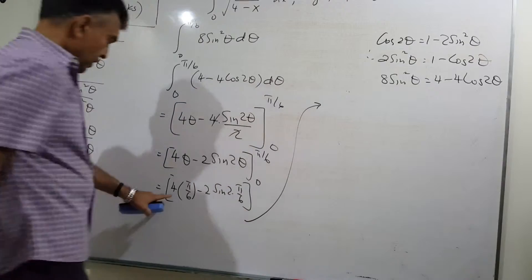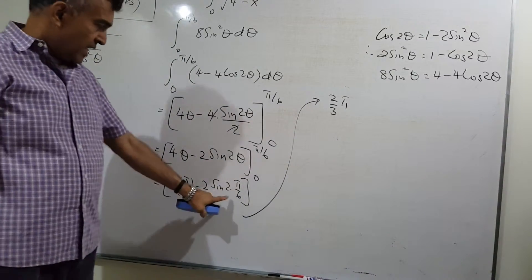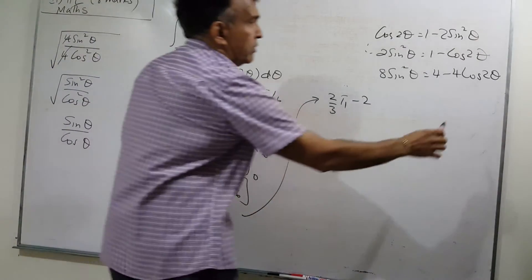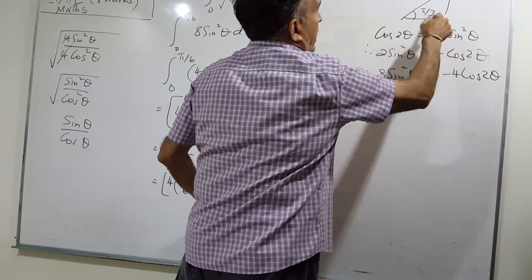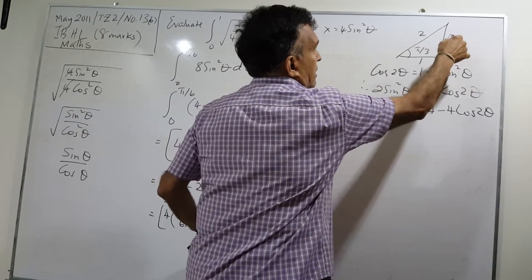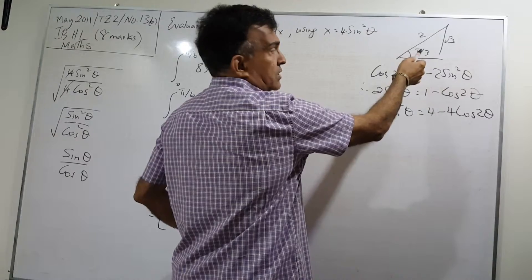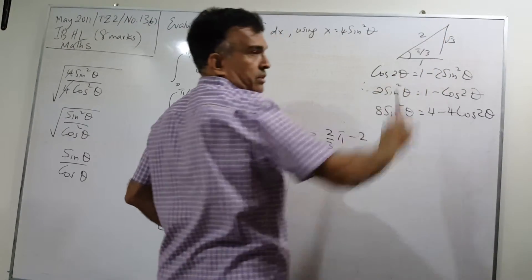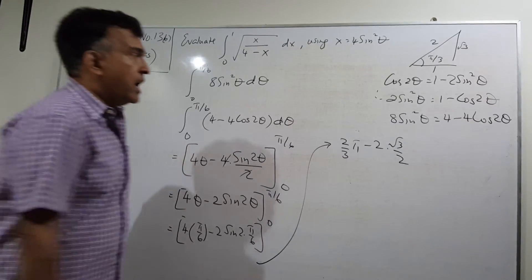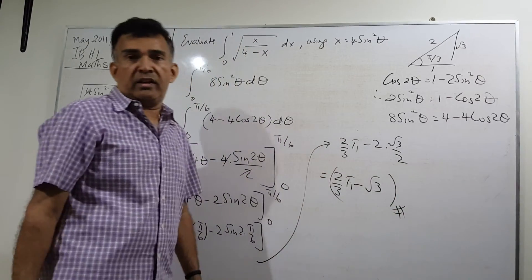So we have 4 times pi over 6, which is 2π/3, minus 2 times sine of pi over 3. Since pi over 3 is 60 degrees and sine of 60 is √3/2, we get 2 times √3/2 equals √3. Our final answer is 2π/3 minus √3.